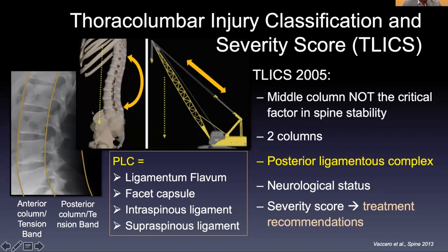There are three things you look at: two can be obtained from imaging, and one from the neurologic exam. First is the integrity of the posterior ligamentous complex, or PLC, which comprises the ligamentum flavum, facet capsule, intraspinous ligament, and supraspinous ligament. If these are disrupted or suspected to be disrupted, that confers a higher degree of instability. Fracture dislocations and distraction-type injuries often involve the PLC, making them technically unstable injuries.